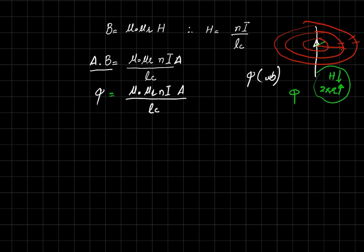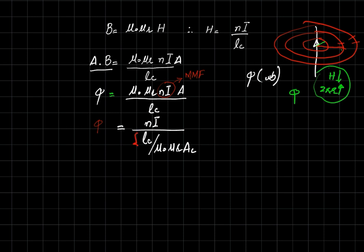Rearranging this equation, we group the quantity NI, which is called the magneto-motive force (MMF) — it is responsible for the generation of the magnetic field. After rearranging, flux equals NI divided by the quantity (length of core divided by mu-naught times mu-r times area of core). This denominator quantity is represented by the reluctance.